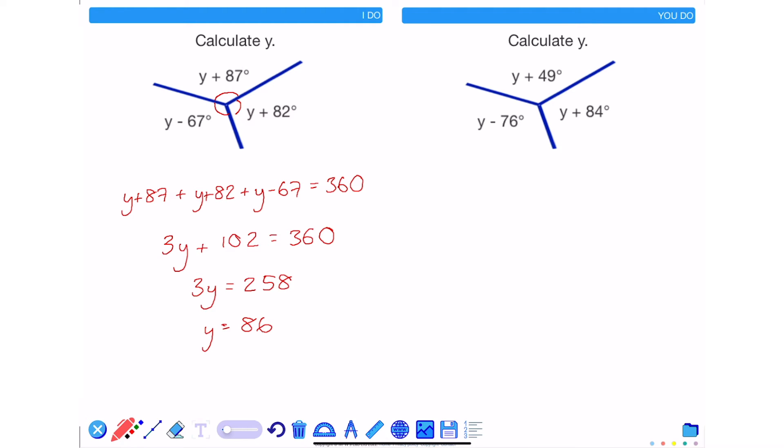Like with the previous example, I know that these three angles will add up to 360 degrees. So y + 49 plus y + 84 plus y - 76 will equal 360 degrees.